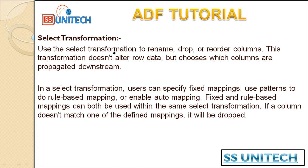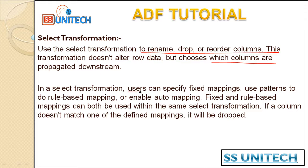The select transformation is used to rename, drop, or reorder columns. This transformation does not alter the row data — it plays with your columns, not the data. We can also choose which columns are propagated downstream.